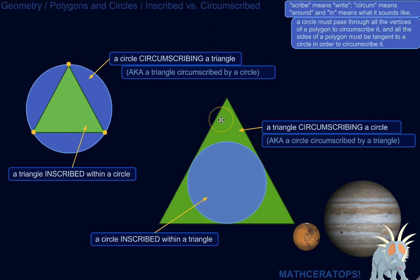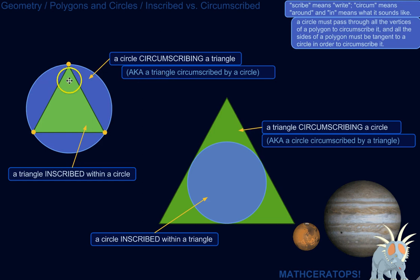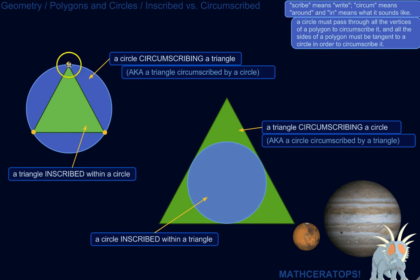Here are two situations which can be described in several different ways. Here we've got a circle that's circumscribing a triangle — it's going around the outside of the triangle. Another way to say that is this triangle is being circumscribed by the circle. This also means that the triangle is inscribed within the circle — it's within the circle.